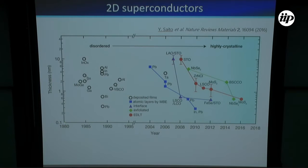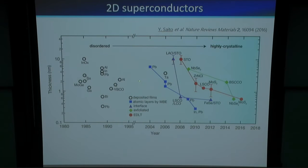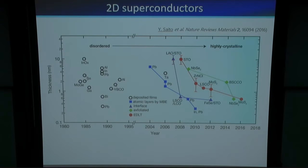This plot shows data only after the 1980s. At that time, people were interested in quantum phase transitions, particularly using deposited films with very disordered structures, including granular or amorphous structures. But in this century, people are switching to highly crystalline 2D superconductors. For instance, atomic layers grown by MBE — including tantalum and indium — are made at such thin levels as 2D superconductors, grown by MBE.